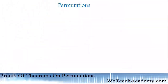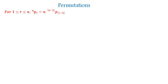Welcome back friends. Today we are going to prove some theorems on permutations. So let us go with the first one. The first theorem is: for 1 ≤ r ≤ n, nPr is equal to n into (n-1)P(r-1).